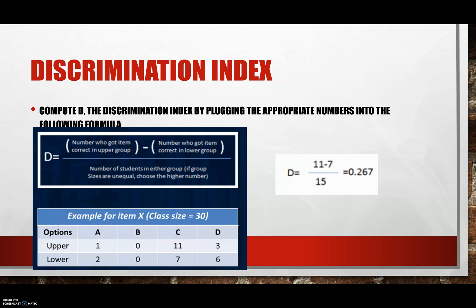A value of 0.267 is positive and indicates that students who did well on the overall exam answered the item correctly. Had the value been negative, it would have indicated that students who did poorly on the overall exam answered the item correctly. What is a good discrimination index? Experts disagree—some say it should be at least 0.3, while others say as long as the value is positive, it is good.